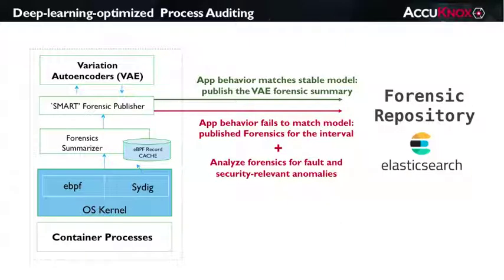It'll publish those forensic windows to run analytics to search for potential issues. Basically, when the VAE sees a runtime interval it's never seen before, we'd like to save that full forensic stream around the interval so that we can run analytics to understand why. We're using the neural net to build a runtime specification of normal behavior and then let it drive our decisions regarding how much forensic detail to publish. I'll show you how this basic idea has an amazing effect on massively scaling app monitoring services.